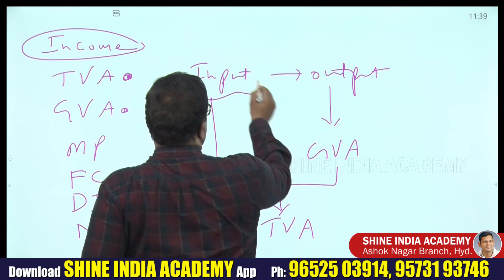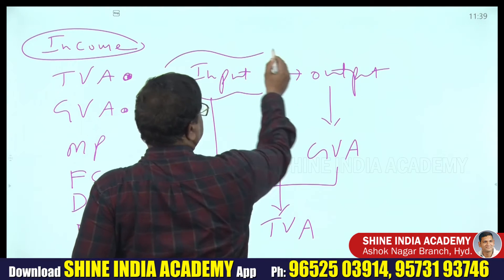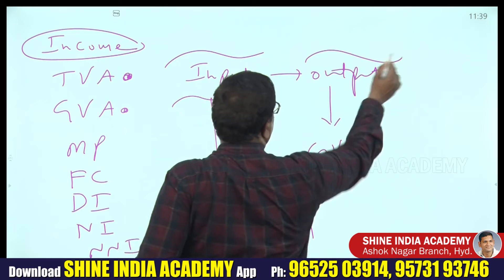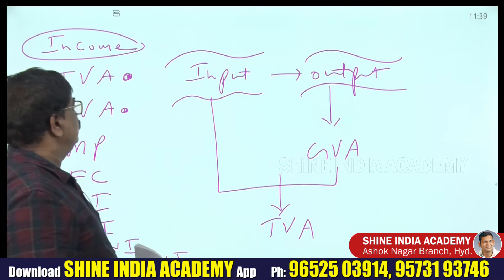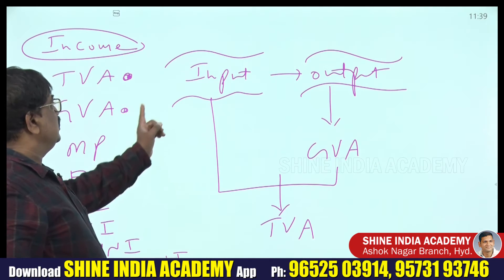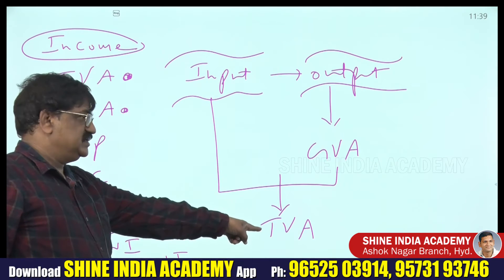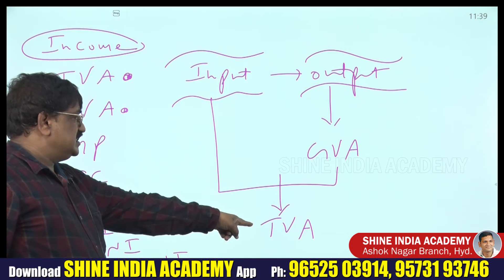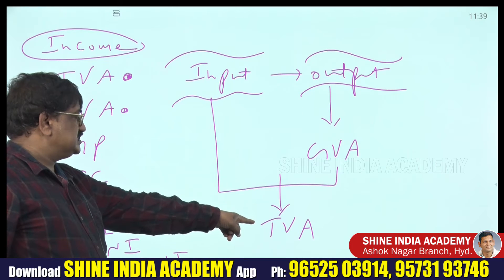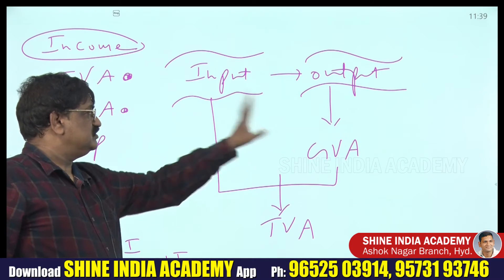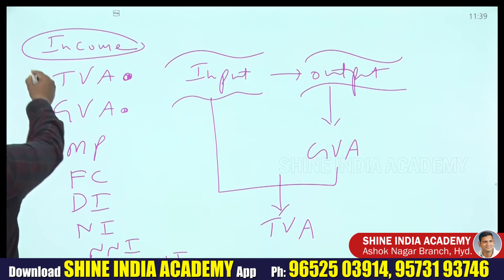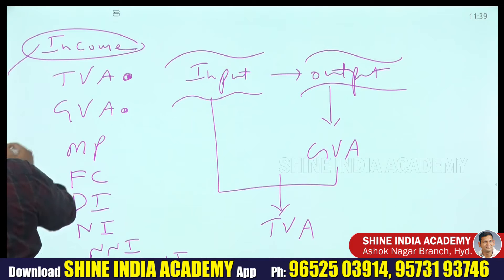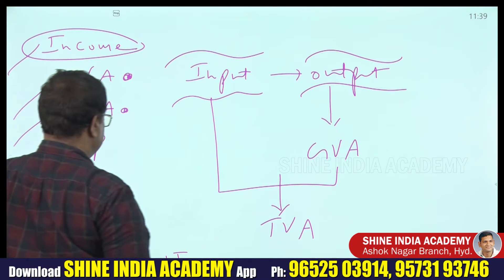In the calculation of national income, NSO considers only output (GVA), not input. If you consider input also, you get TVA. National income only cares about GVA, not TVA.